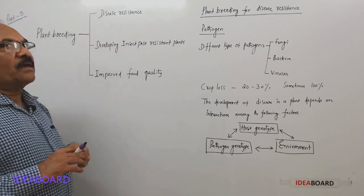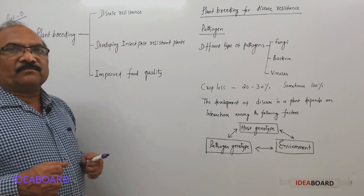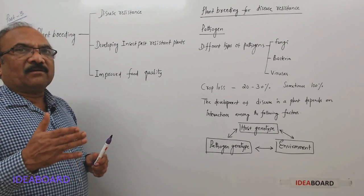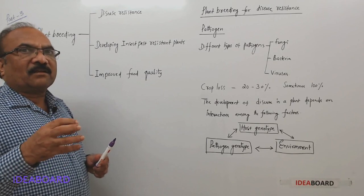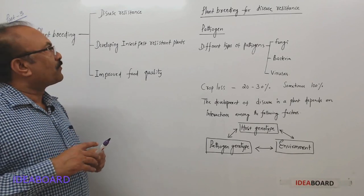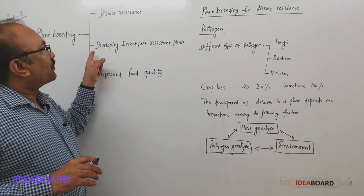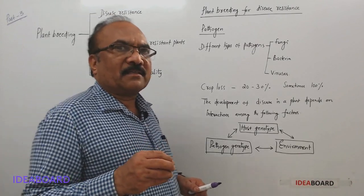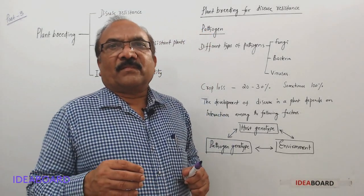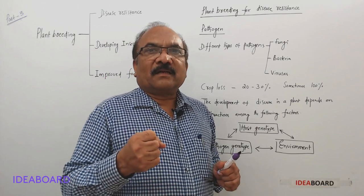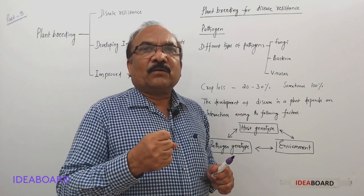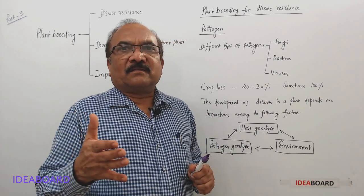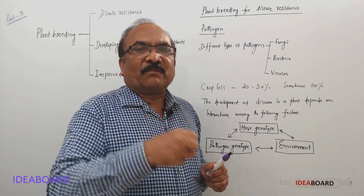First of all, the plant should be disease resistant. Then only it can withstand all the diseases caused by different pathogens. And if the plants are attacked by different insects — insect pests — it should have the capacity to resist those insect pests. Then only this loss will be minimized.